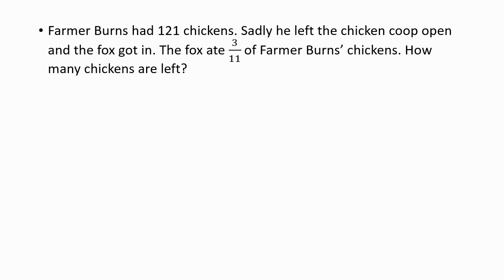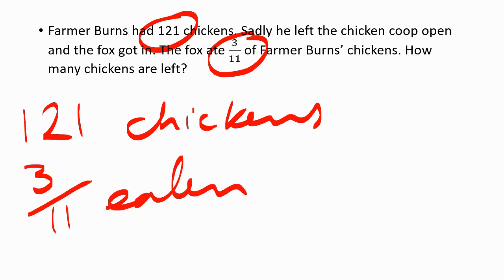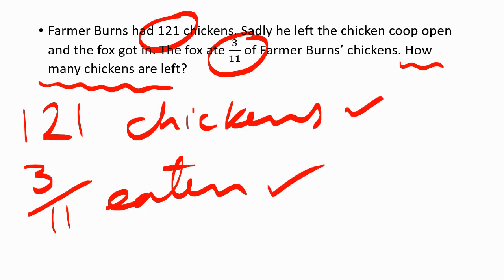I hope you circled 121 and 3 elevenths. Because 121 chickens is an important part of this question, and 3 elevenths have been eaten — that's good information to write down. The key question is: how many chickens are left? So what do you think might be the first thing to do? Remember, there are 121 chickens and 3 elevenths have been eaten. What's the first thing we've got to do to find out how many chickens are left? Have a think about that.